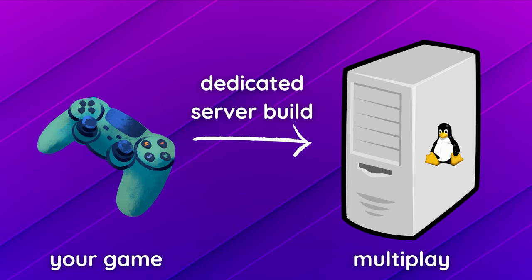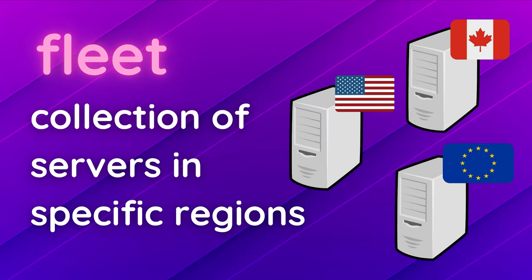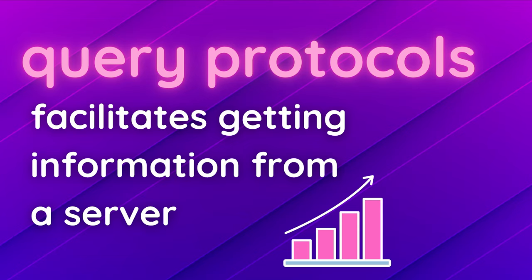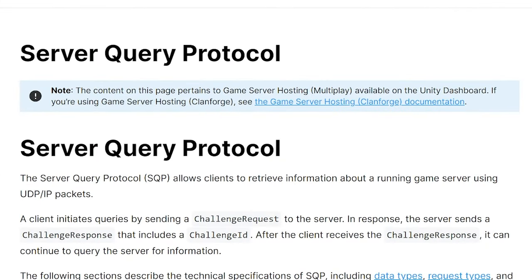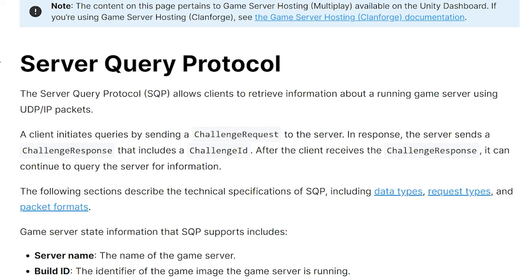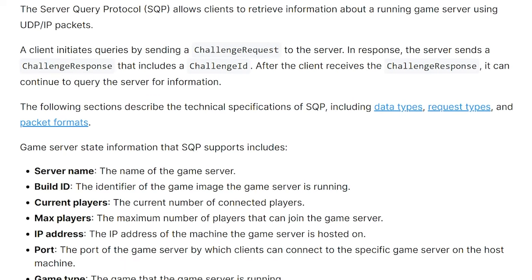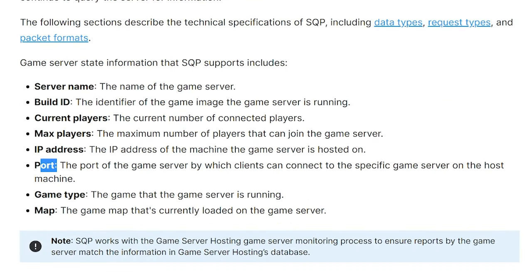A fleet is essentially a collection of servers within a specific region — North America, Europe, Canada, etc. You can have various fleets, each covering a specific region. There's also a query protocol called SQP (Server Query Protocol) which uses UDP packets to retrieve information from the server such as number of players, IP address, port, analytics, and it can also detect server crashes.